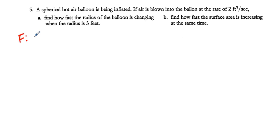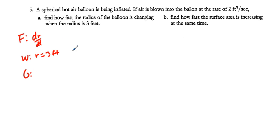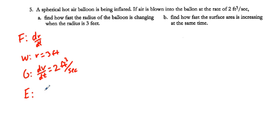We're trying to find dr/dt when r = 3 feet. What we're given is dV/dt — air blown into the balloon changes the volume — so dV/dt = 2 cubic feet per second. Our equation is V = (4/3)πr³.